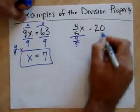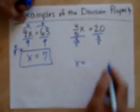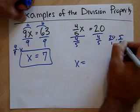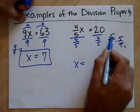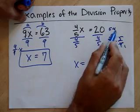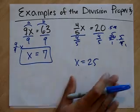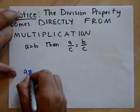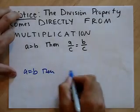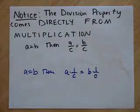Same thing here — Division Property of Equality, divide both sides by the same number. The coefficient of X is the number in front of the variable. This is X times 4 fifths, so to undo that multiplication I divide both sides by 4 fifths. 4 fifths over 4 fifths is 1, giving me X. Then 20 divided by 4 fifths is the same as 20 times 5 over 4 — flip and multiply. 20 is 5 times 4, the 4 cancels, leaving 5 times 5: X equals 25. Dividing by C is the same as multiplying by 1 over C.